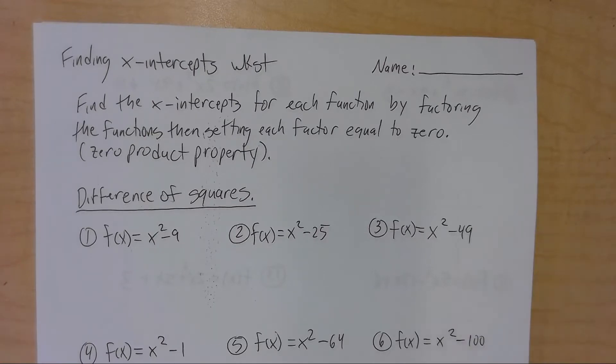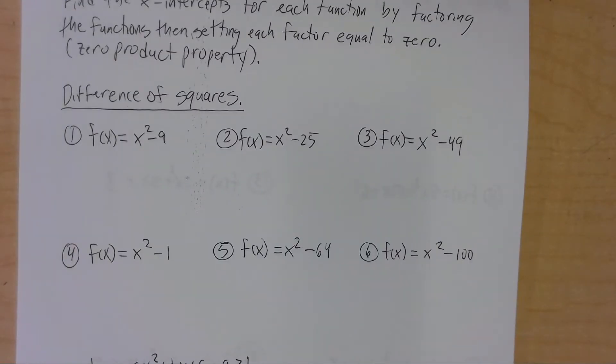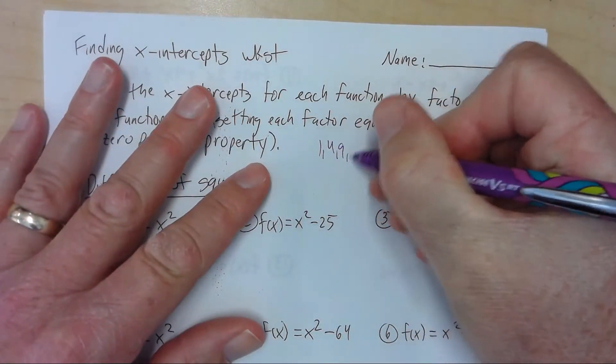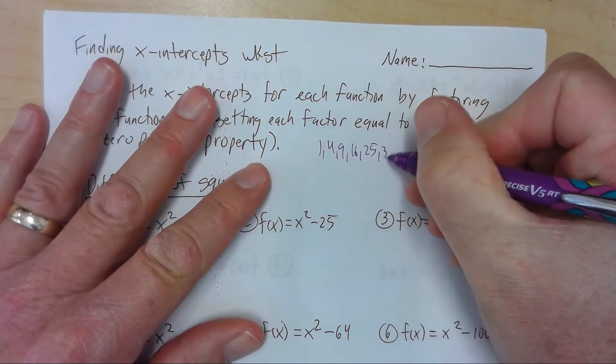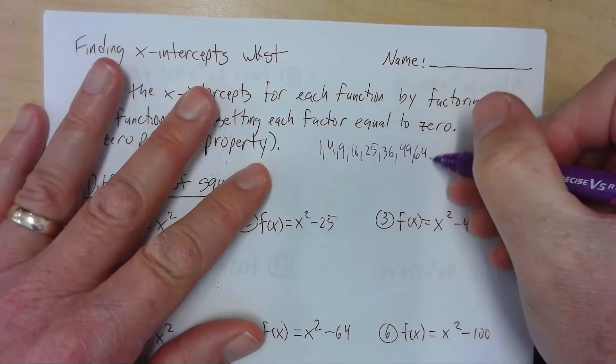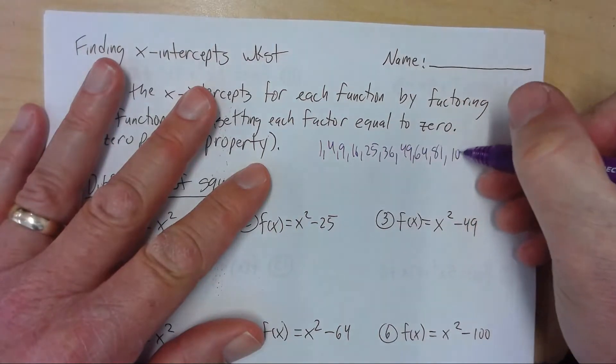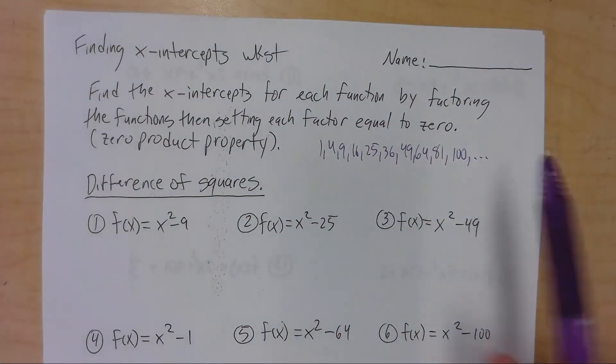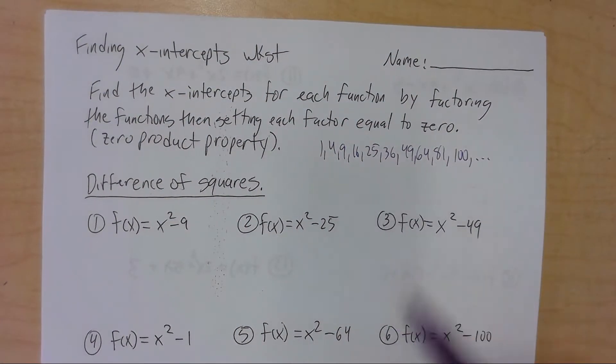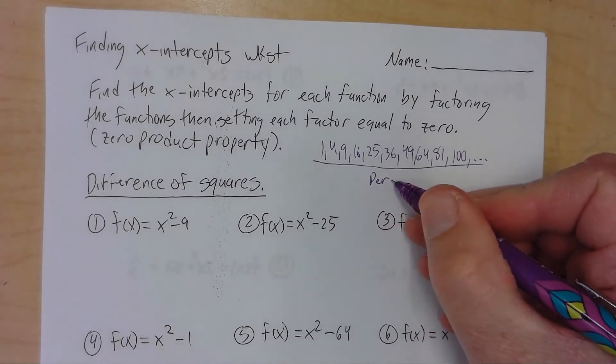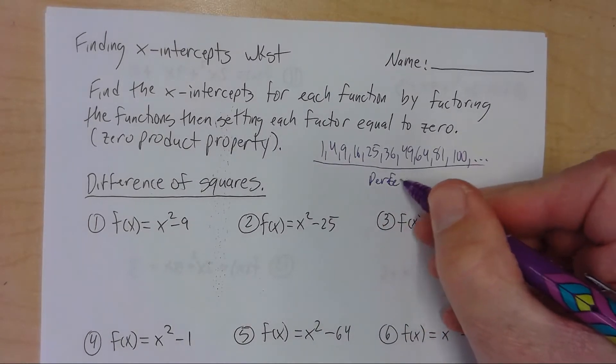These first problems here have to do with the difference of two perfect squares. I'm going to make a sequence of numbers: 1, 4, 9, 16, 25, 36, 49, 64, 81, 100, and dot dot dot. This could go on forever. So basically, I've just listed the perfect squares. These are all called perfect squares.